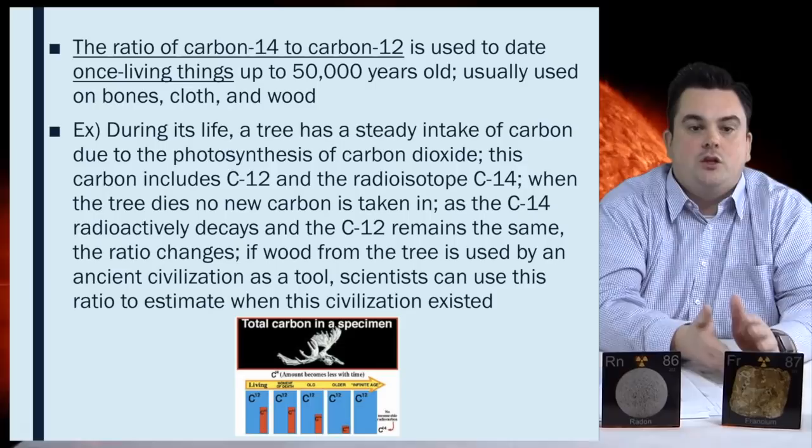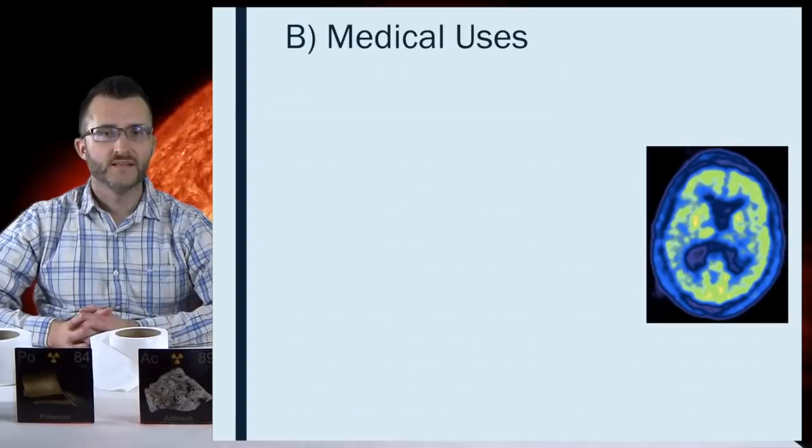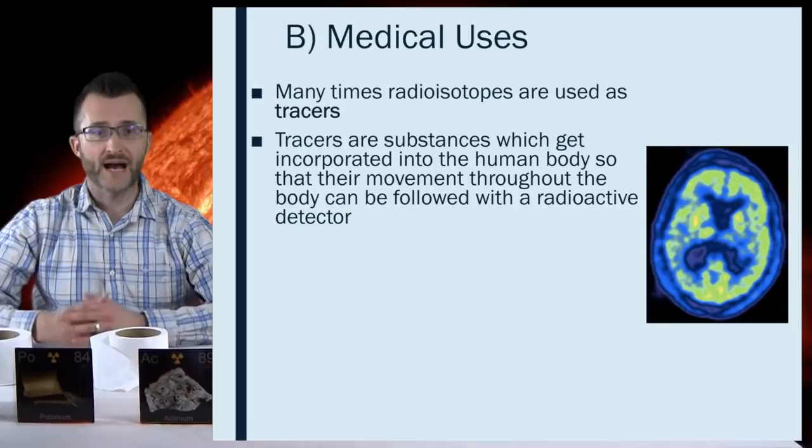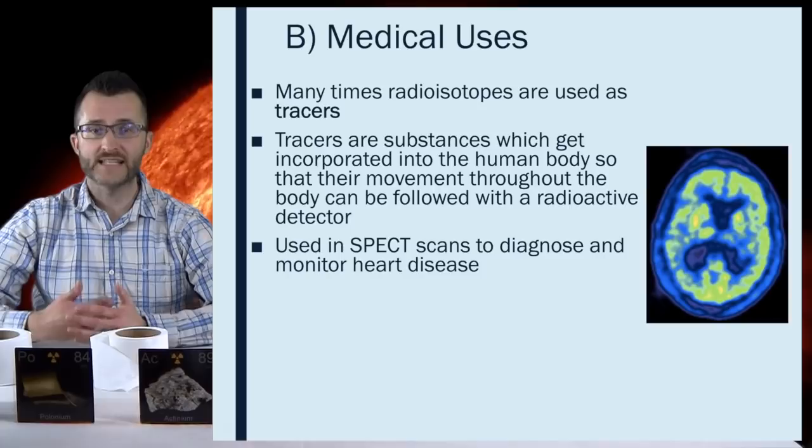Medical uses. Many times, radioisotopes are used as tracers. Tracers are substances which get incorporated into the human body so that their movement throughout the body can be followed with a radioactive detector. Used in SPECT scans to diagnose and monitor heart disease. Used in PET scans to detect and monitor cancer. As long as the radioisotopes used have short half lives and can quickly be removed from the body, they are safe to be used.